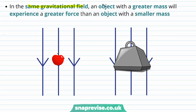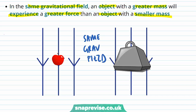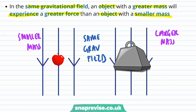In this same gravitational field, an object with a greater mass will experience a greater force than an object with a smaller mass. So here we have two objects in the same gravitational field. The apple has a smaller mass and this weight on the right has a larger mass. And because force is proportional to mass, the force on the apple is smaller than the force on the weight.